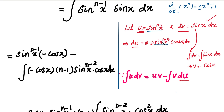Then, dv = sin(x) dx. So sin(x) is integrated, and the integral of sin(x) is minus cos(x). So we integrate both sides: the integral of dv is v, and the integral of sin(x) gives us minus cos(x).